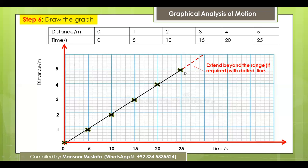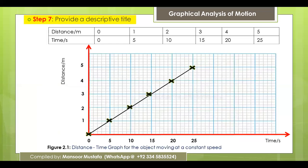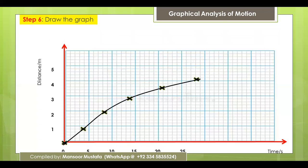If extending a straight line, represent the extension with a dotted line to distinguish it from actual data points. Extension allows you to predict the next value. However, this cannot be done with a curve, because a curve means there is non-linearity in the data, and you cannot predict the next value.